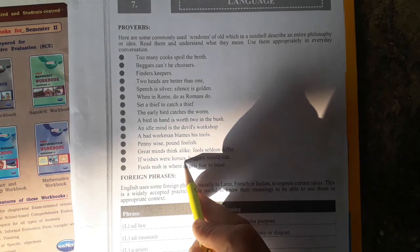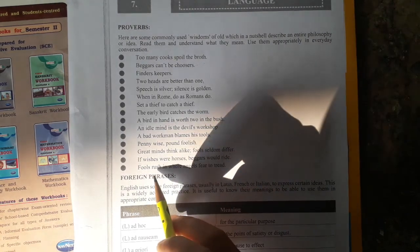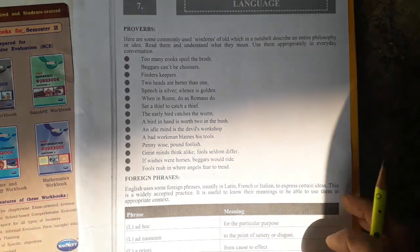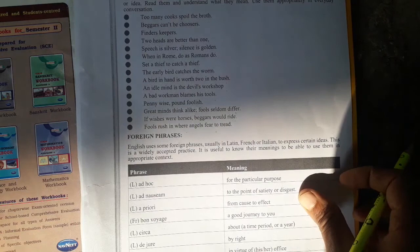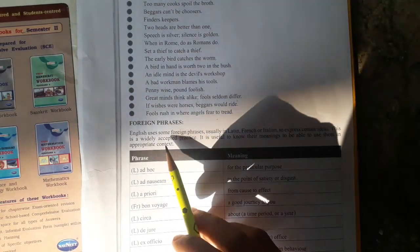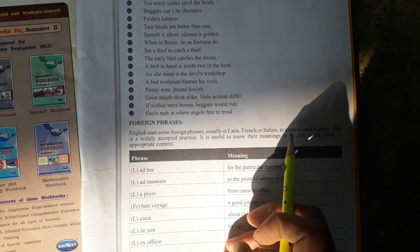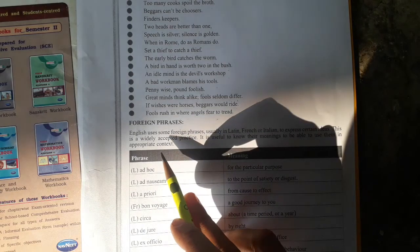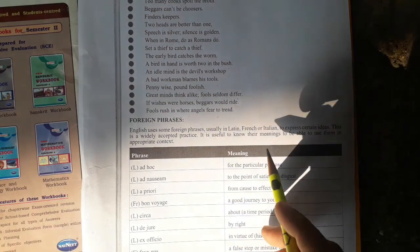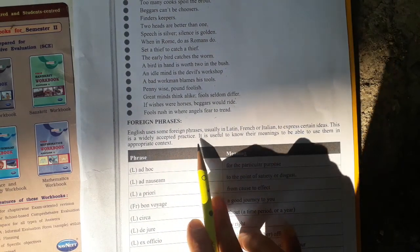Fools seldom differ. If wishes were horses, beggars would ride. Fools rush in where angels fear to tread. Foreign phrases: English uses some foreign phrases, usually in Latin, French or Italian, to express certain ideas. This is a widely accepted practice. It is useful to know their meanings to be able to use them in appropriate context.